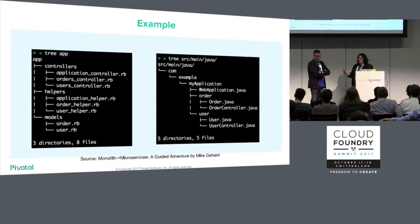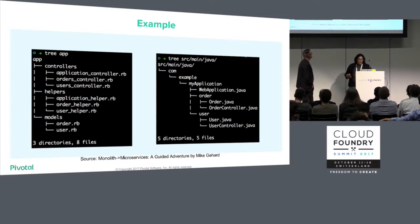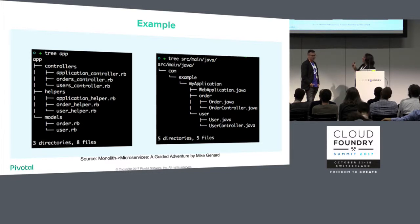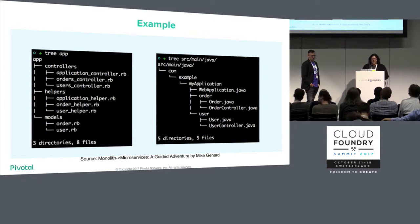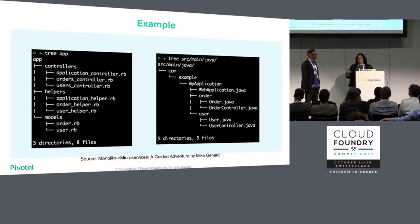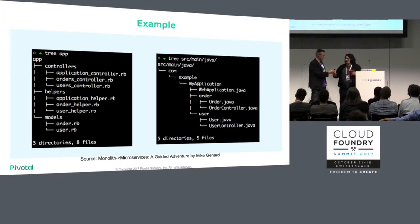Ultimately what we're trying to accomplish in modernization efforts is to reduce the amount of cohesion and coupling within the application — meaning how badly does a change in one part of the application impact another part? At CF Summit, Mike Gihard demonstrated this simply: with a poorly structured app, changing 'orders' requires making that change in three places; with a well-formed application, making a change to orders is really just one place. Things that change together should be together.